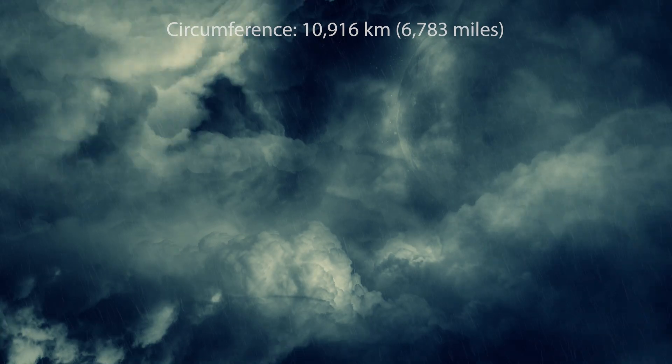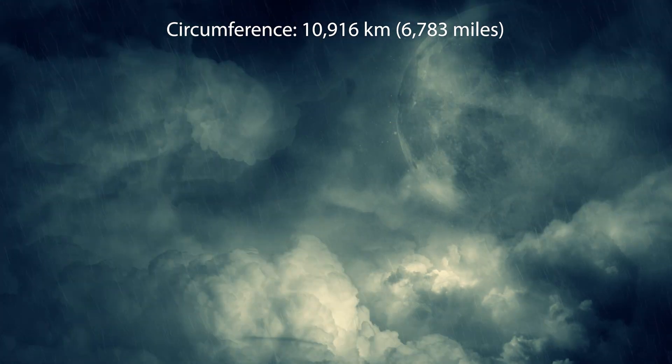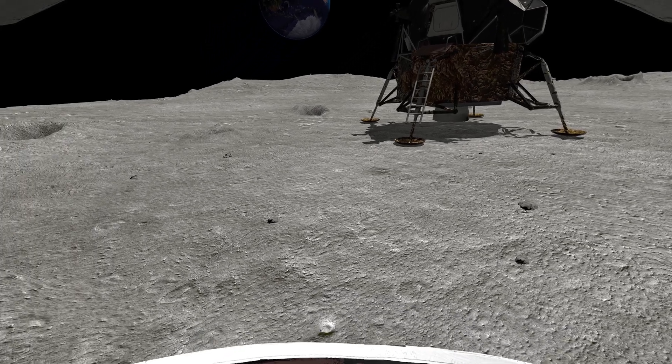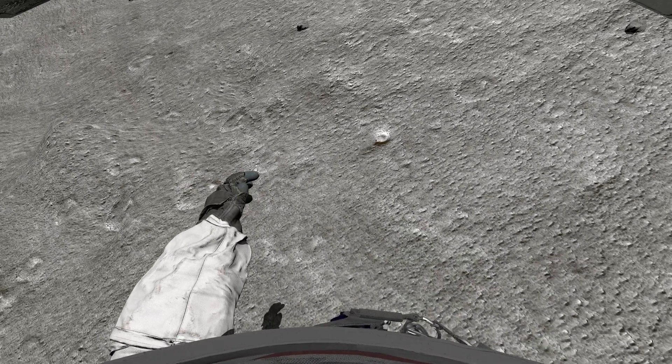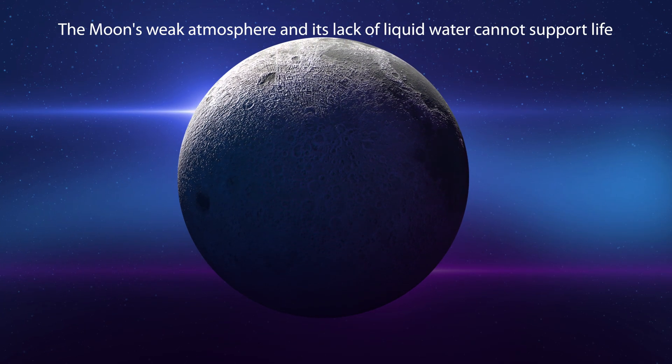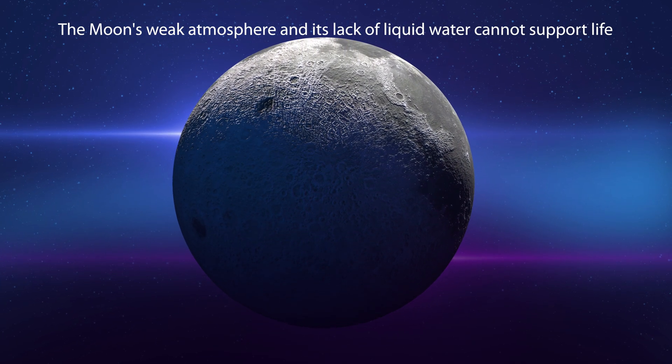The moon helps stabilize our planet. And it is as wide as Australia. Twelve humans have walked on the moon. However, there is no air to breathe on the moon. The moon has a very thin and tenuous atmosphere called an exosphere.